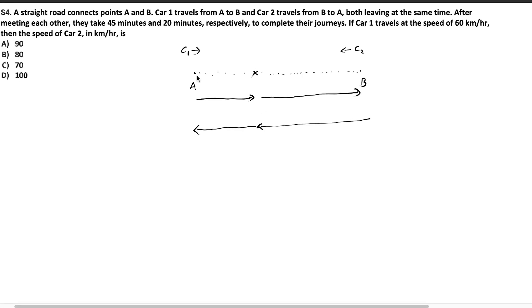A straight road connects point A and B as shown in the diagram. Car 1 travels from A to B and car 2 travels from B to A, both leaving at the same time. After meeting each other, let's assume that they are meeting each other at X, they take 45 minutes and 20 minutes. Let's assume that the time taken by car C1 to start from A and reach X is T, which means the time taken by car C2 to start from B and reach X will also be the same T.